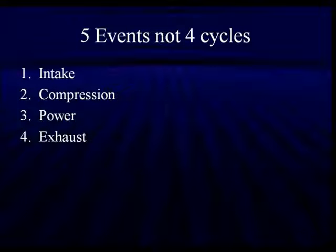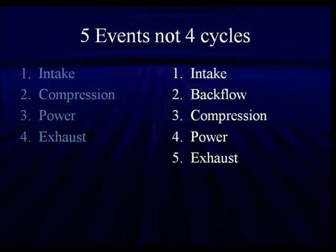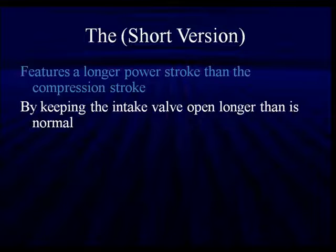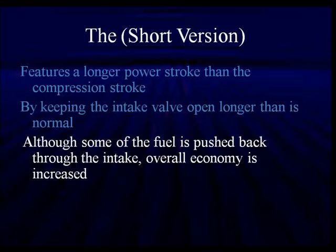Let's talk about the five events — not just four cycles. We're all familiar with the four cycles: intake, compression, power, and exhaust. The Miller-Atkinson breaks it down into five: intake, back-flow into the intake manifold, then compression, then power and exhaust. It features a longer power stroke than compression stroke. By keeping the intake valve open longer, some of the fuel is pushed back through the intake, but overall economy increases because we've reduced the cylinder volume. This reduces CO2 contribution because we're burning less fuel. The camshaft bore is offset 12 millimeters, which lowers compression side forces on the power stroke and reduces engine friction.